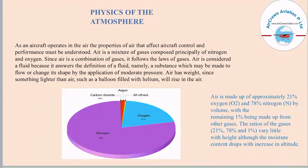Air has weight — something that is lighter than air, such as a balloon filled with helium, will rise in the air. Air is made up of approximately 21% oxygen and 78% nitrogen by volume, and the remaining 1% consists of other gases. The ratio of these gases — 21%, 78%, and 1% — varies very little, although the moisture content drops with an increase in altitude.